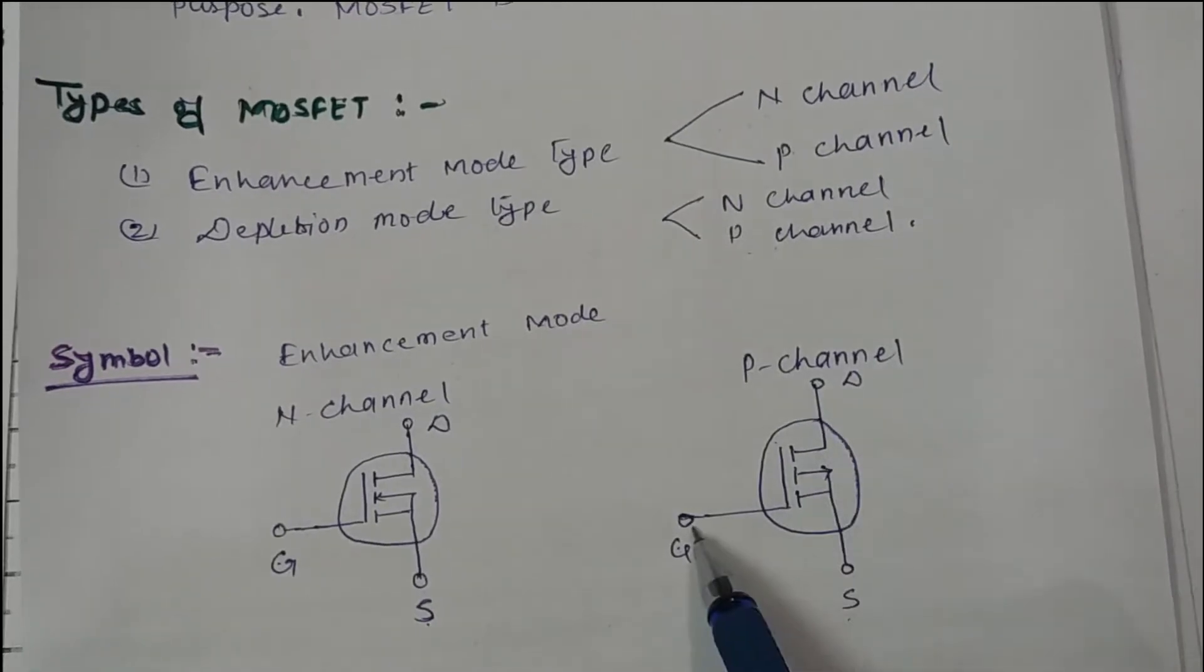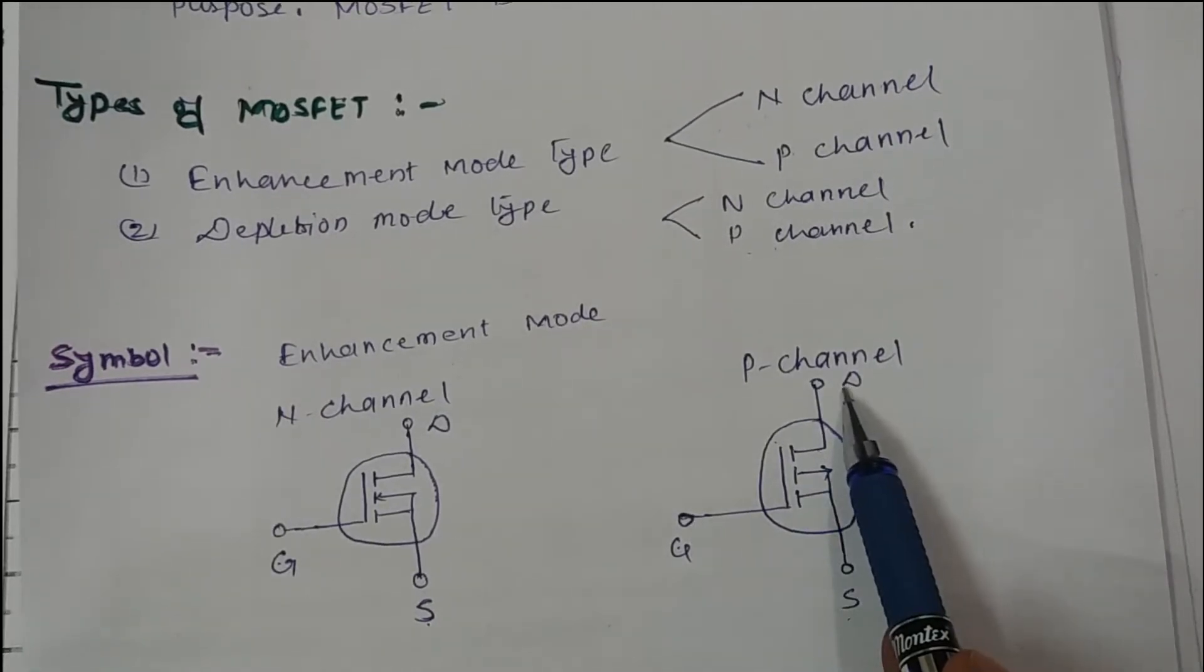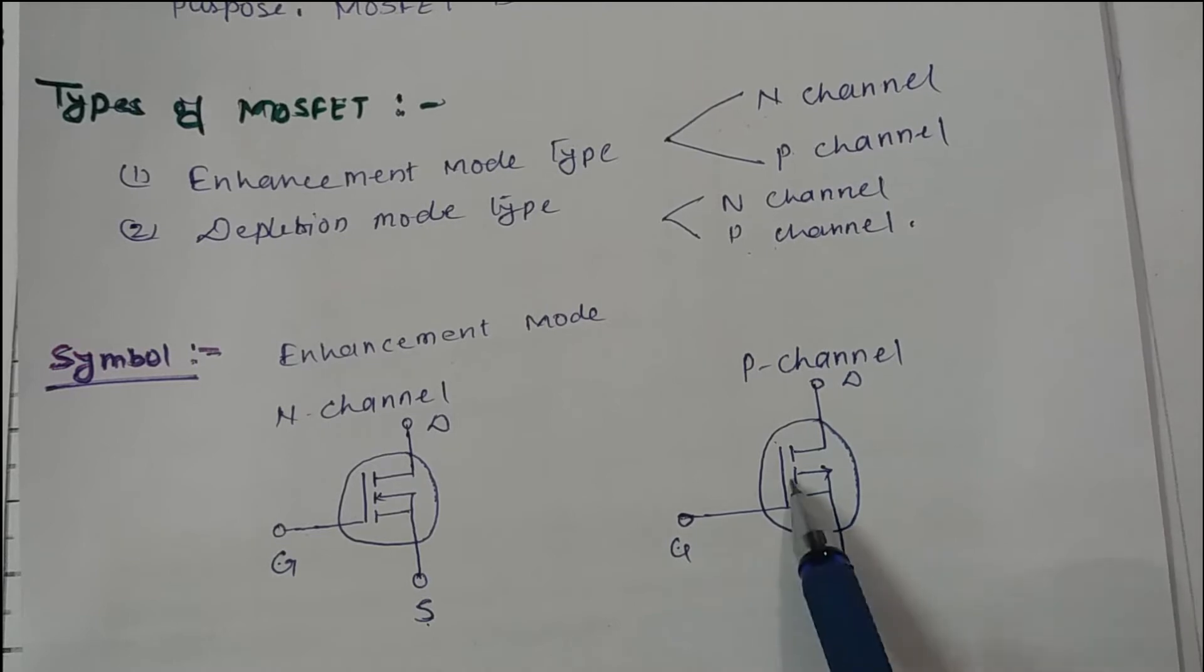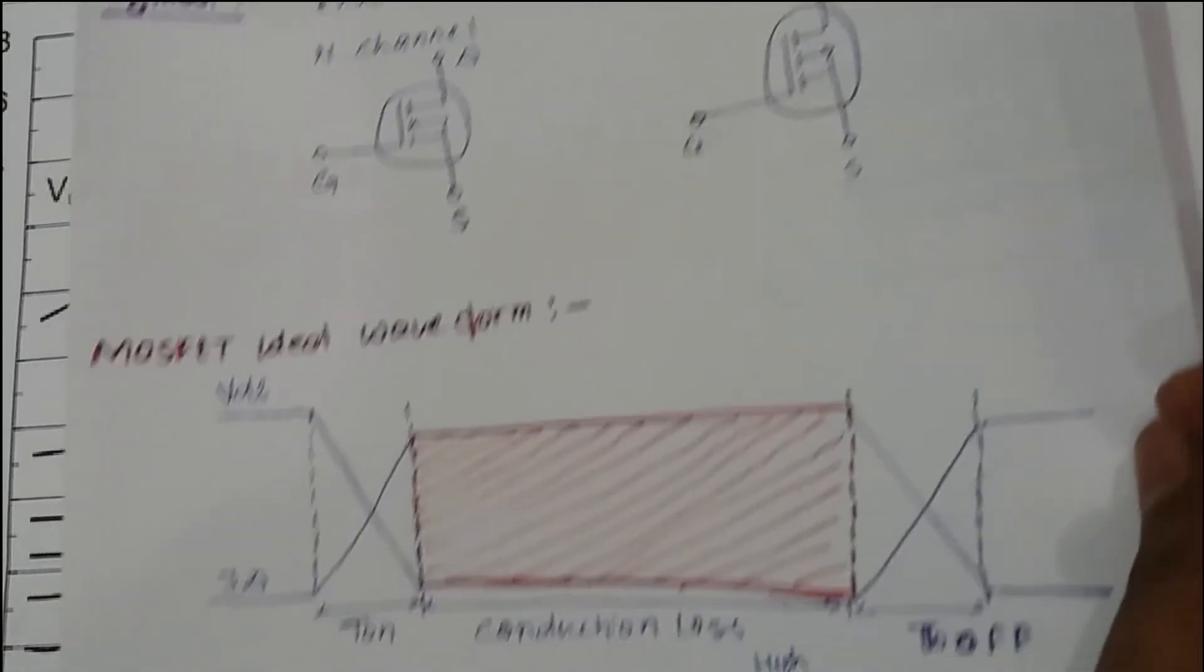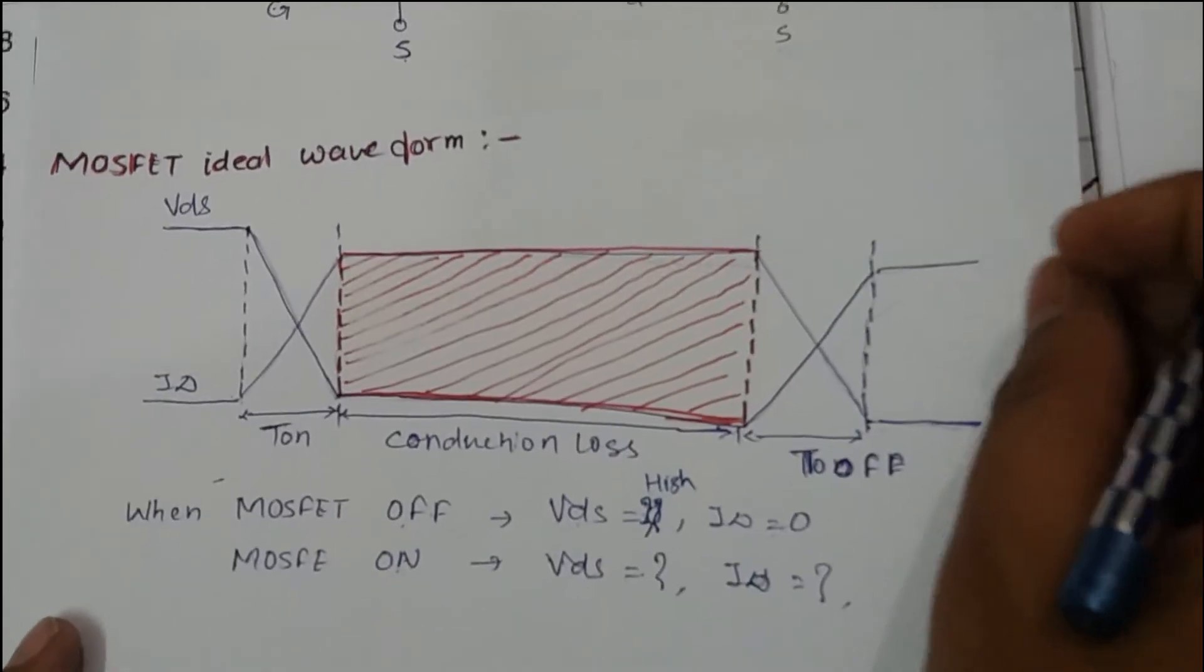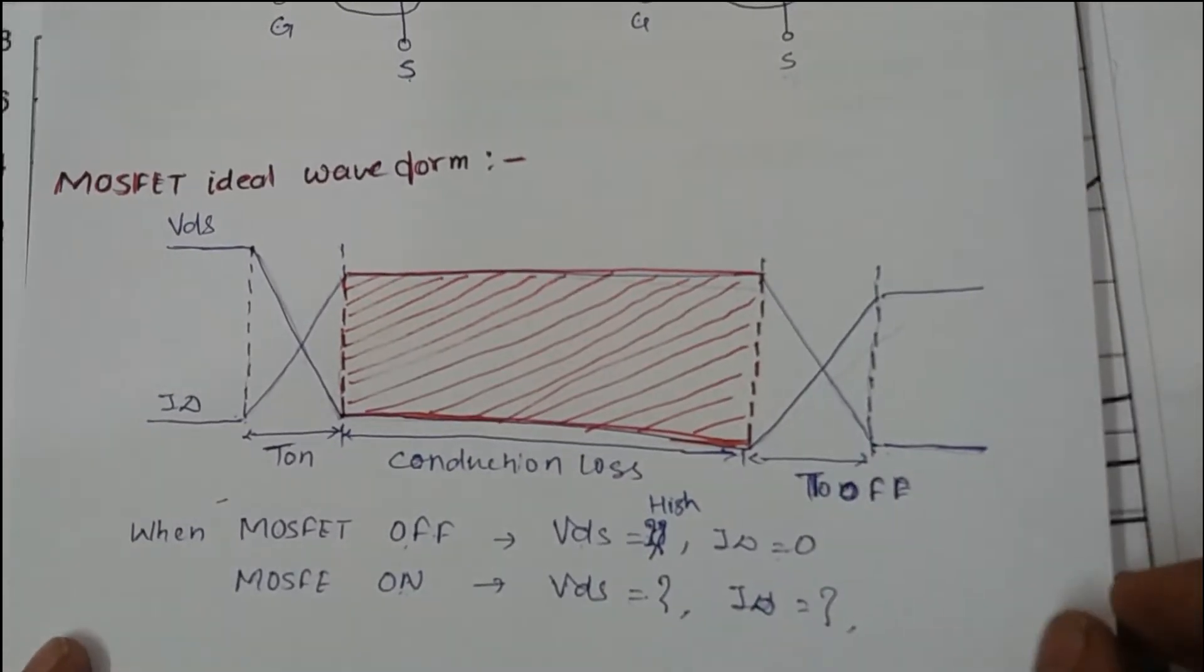MOSFET ideal waveform. This is the drain terminal, this is the source terminal, arrow goes outwards.